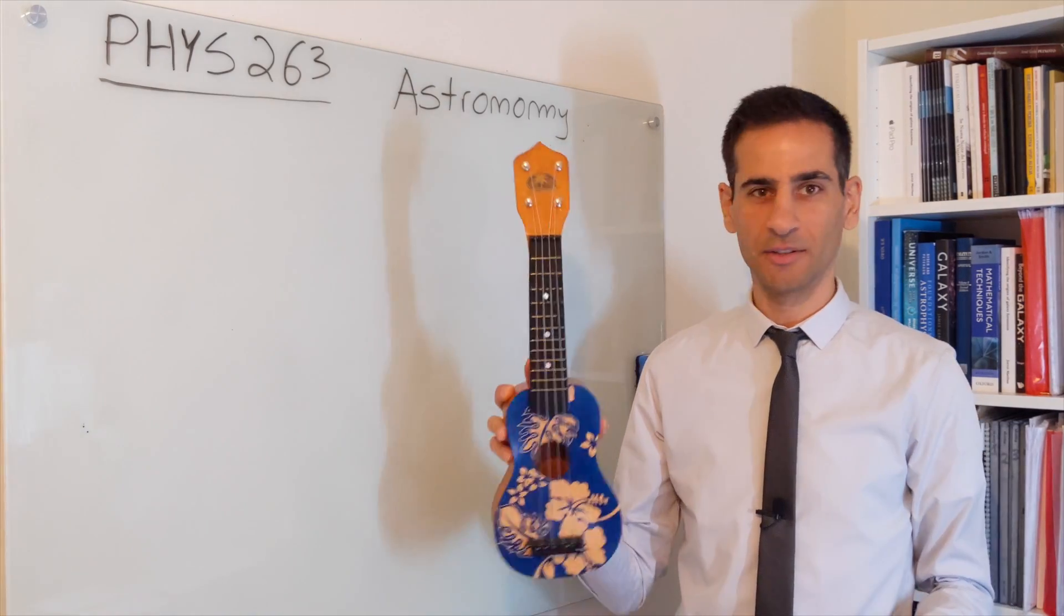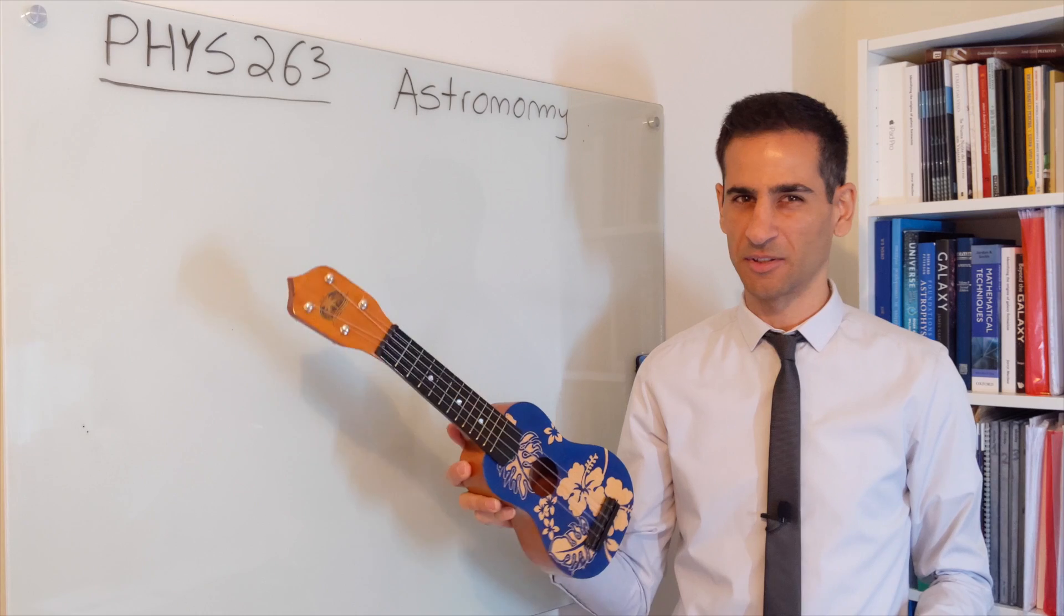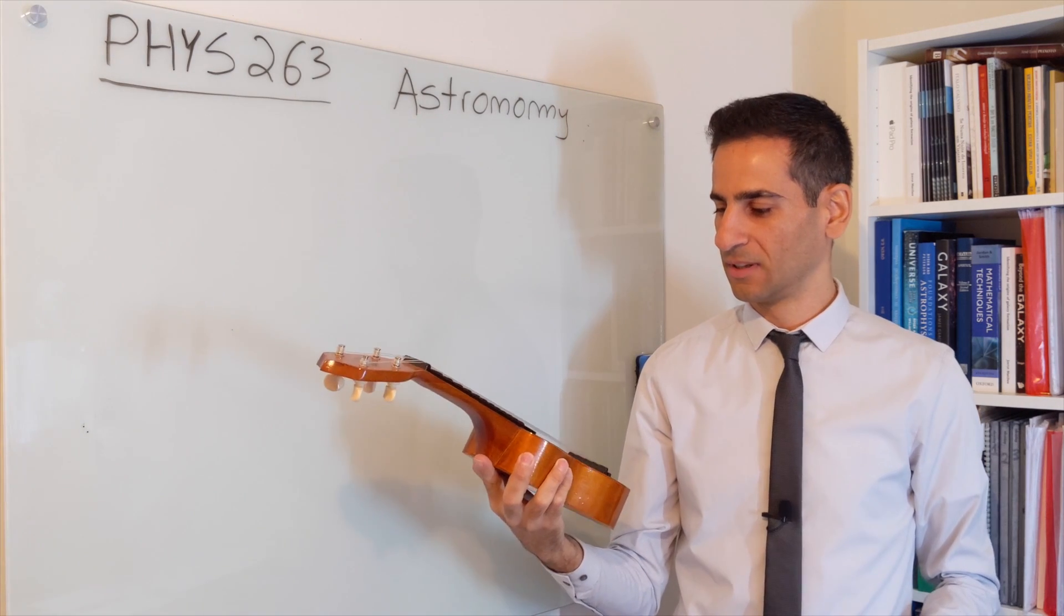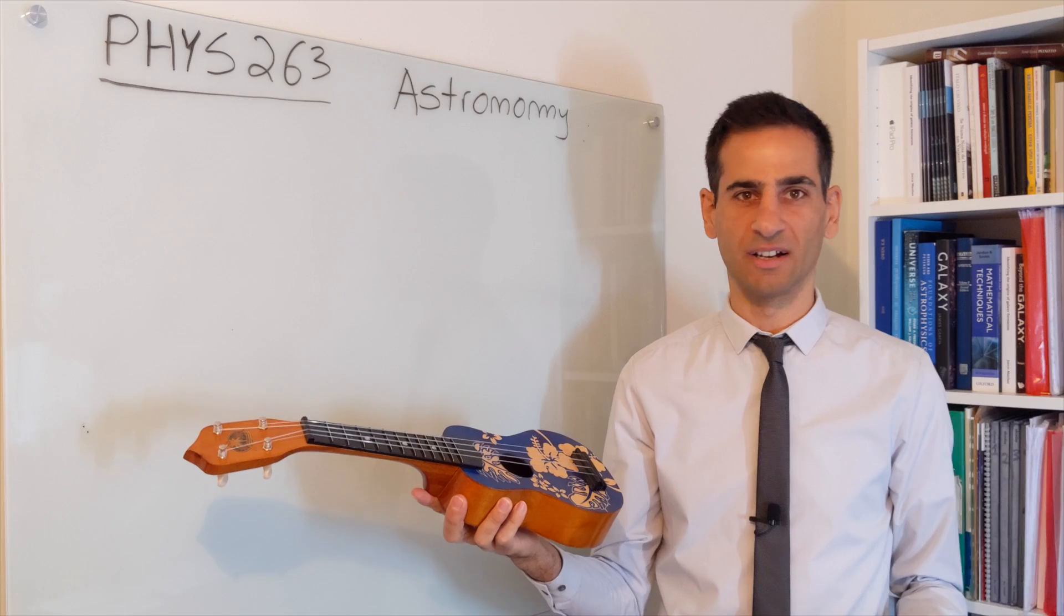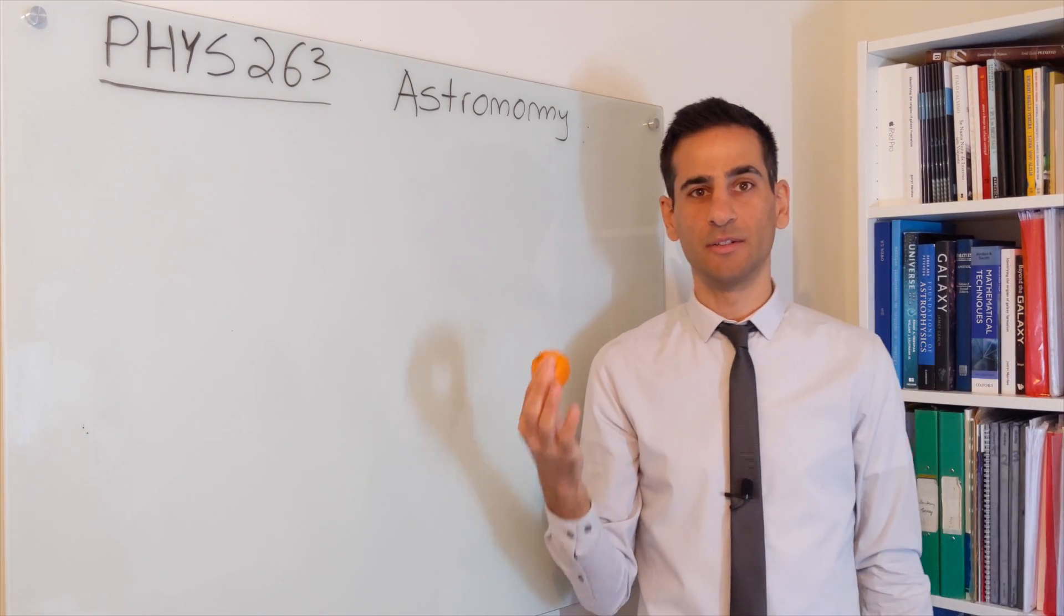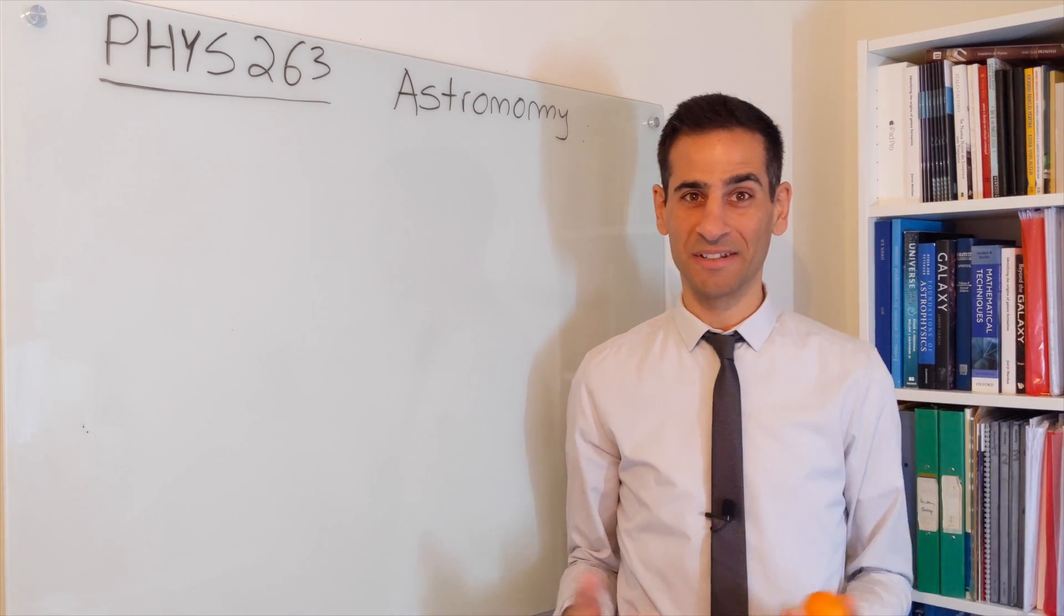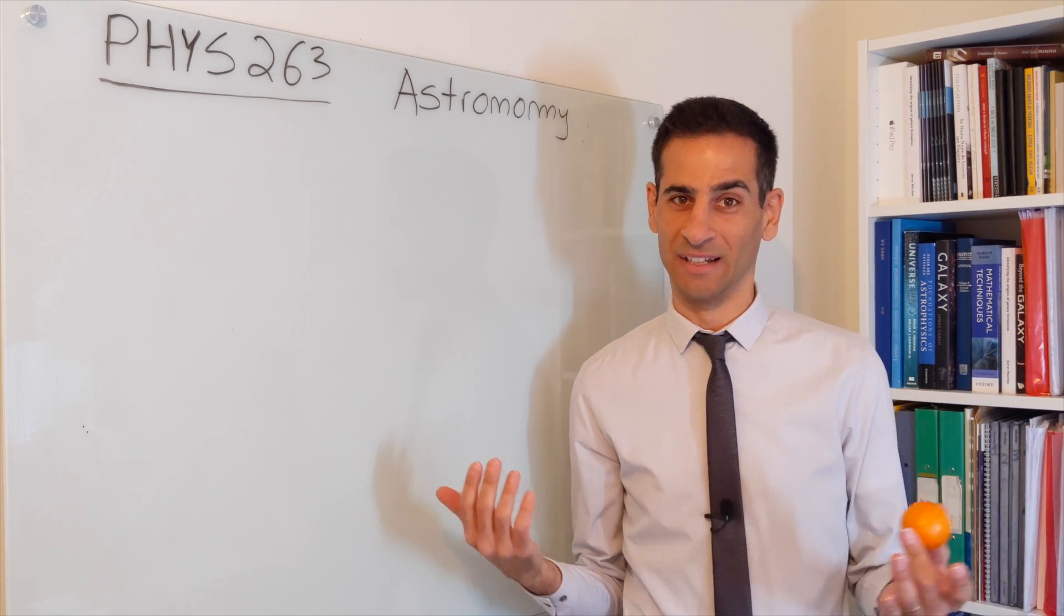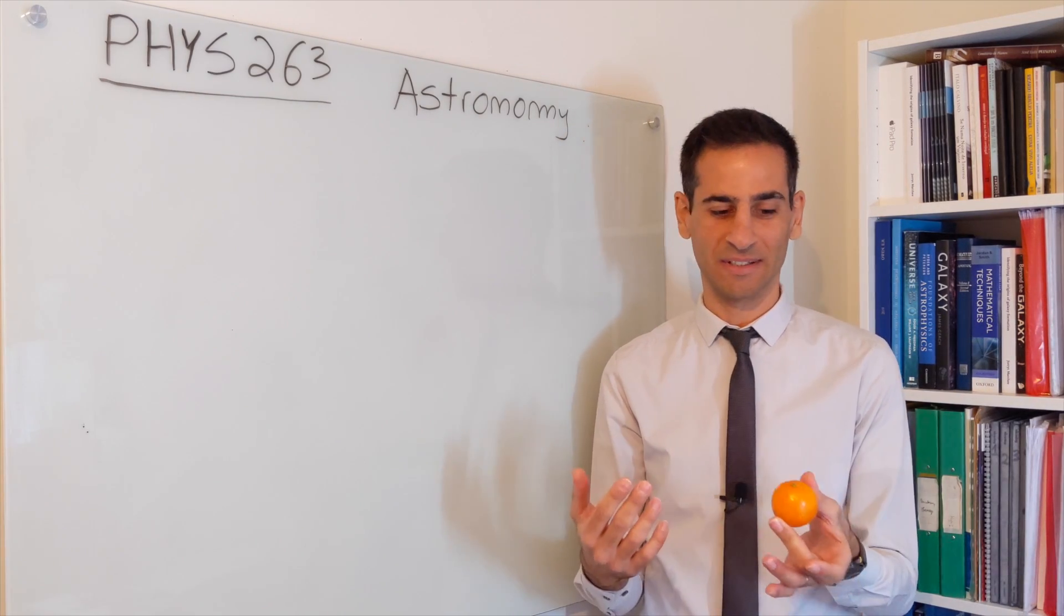Yeah, although a ukulele is not the best projectile, we should perhaps turn it into something like, I don't know, an orange or something of that kind. Yeah, that's better. So this is what we're going to use. And the great thing about online asynchronous lectures is that you can actually edit them. And hopefully this will look all right when you see it.